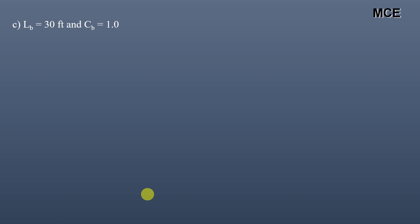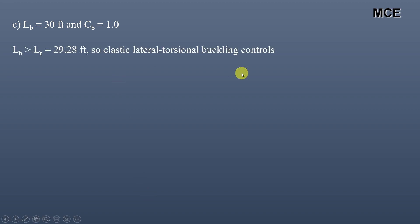For Part C, the beam has an unbraced length of 30 feet with CB equal to 1. Since LR was calculated as 29.28 feet in the previous part, and LB of 30 feet is greater than LR, elastic lateral torsional buckling will control the strength.